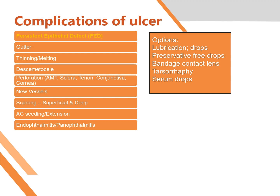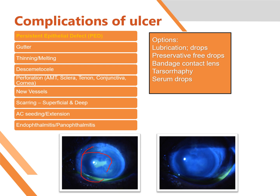First of all is the persistent epithelial defect. This means the ulcer has healed, but there is still an epithelial defect. If that epithelial defect, which is stained here, doesn't heal up to 10 days, we call it persistent epithelial defect. The options are lubrication like frequent tear eye drops, preservative-free eye drops, bandage contact lens which is a large contact lens covering the whole cornea, temporary tarsorrhaphy which means closing the eyelids, and serum eye drops made from the blood of the patient. Remember, all these options are MCQs, so remember the options on this slide and others because every single line is a MCQ.